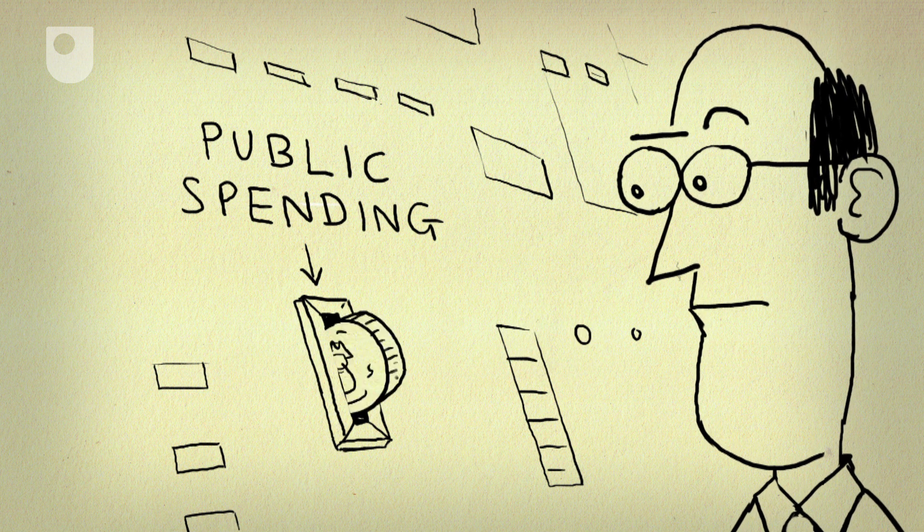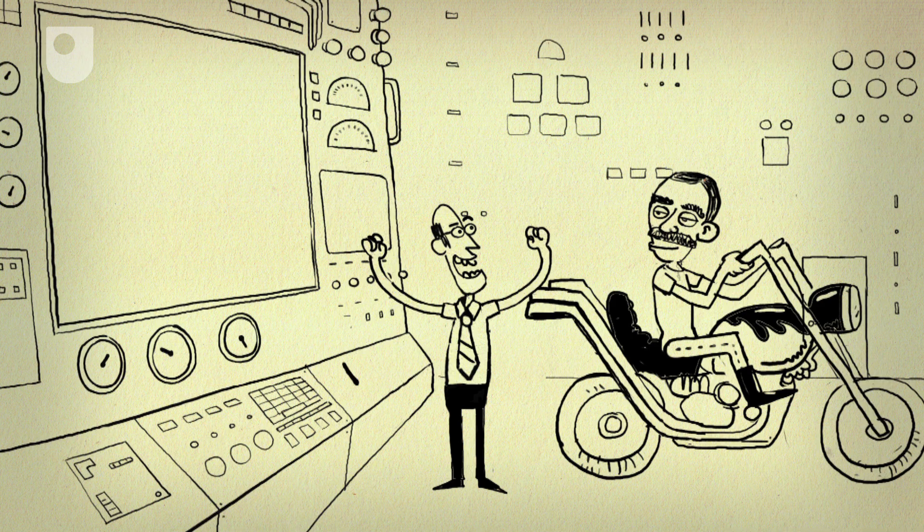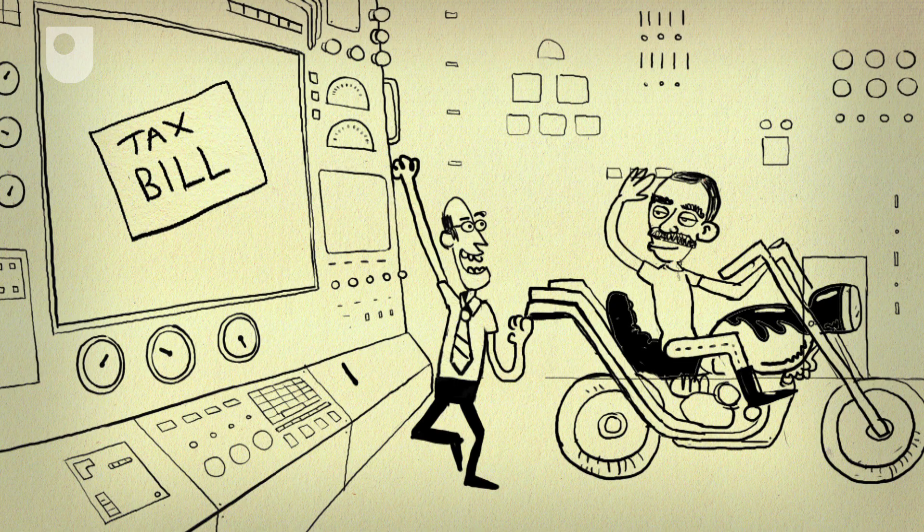So instead they should spend now and tax later when everyone's happy to pay. Though making people happy to pay tax was something even Keynes didn't solve.